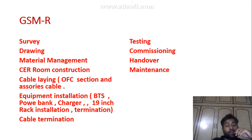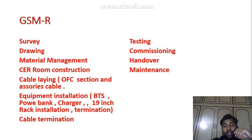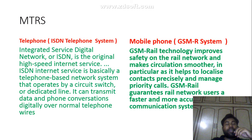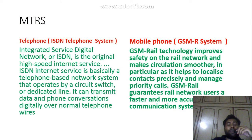In the GSM-R OFC section and associated cable, equipment installations include BTS, power bank, charger, and 19-inch rack installations, terminations, and cable terminations. Then comes testing, updated commissioning, handover, and maintenance.